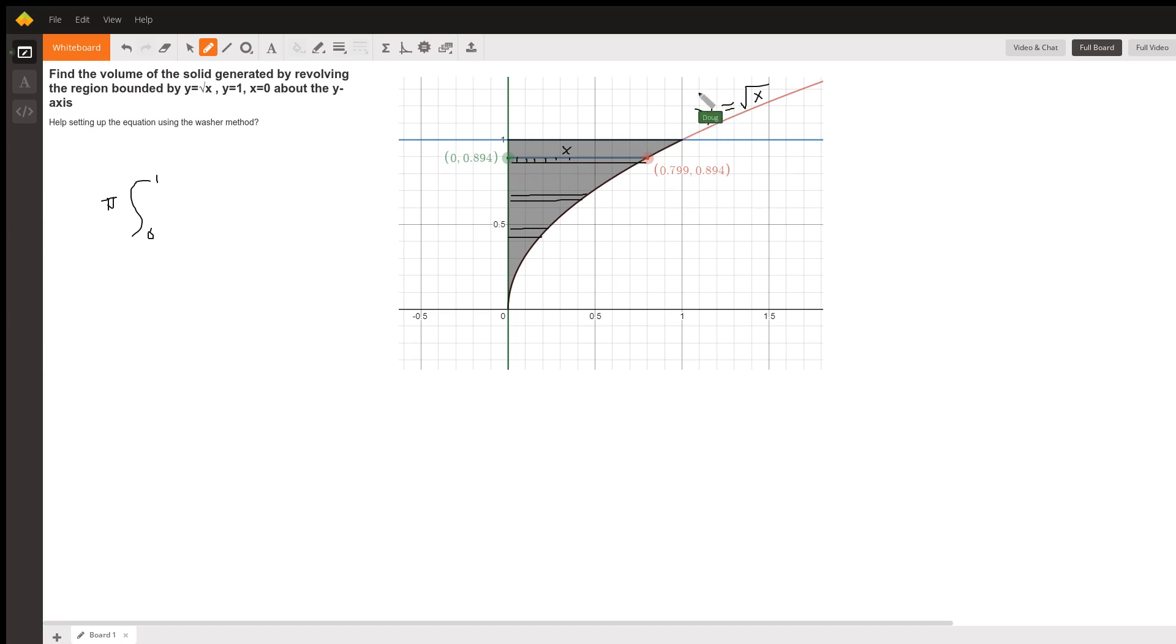If we square both sides of this equation, we get x equals y squared. So, this distance right here is really y squared. Whatever y value we're encountering, as we move from 0 to 1 along the y-axis to get the corresponding radius of the washer, we square that y value, and we will have the radius.